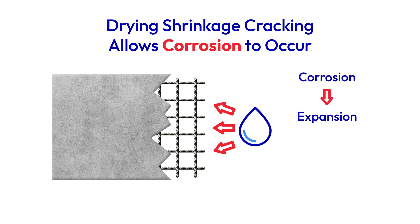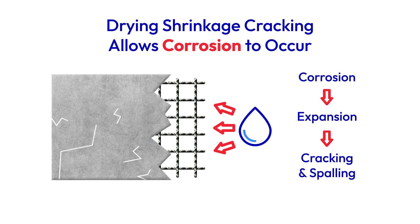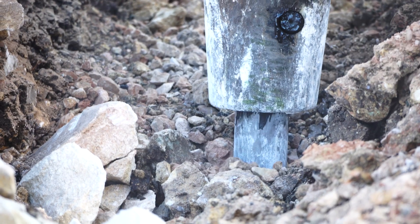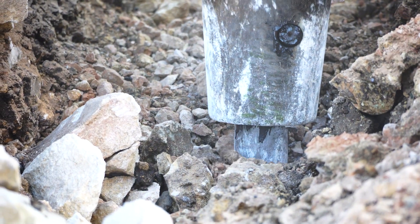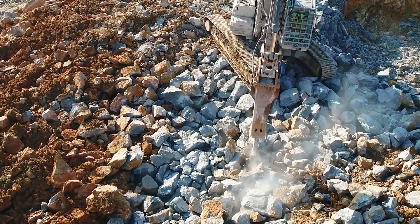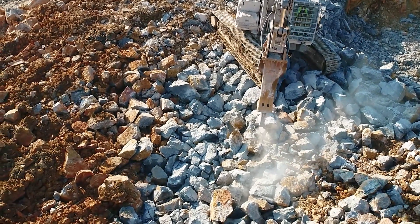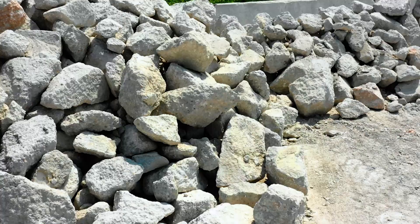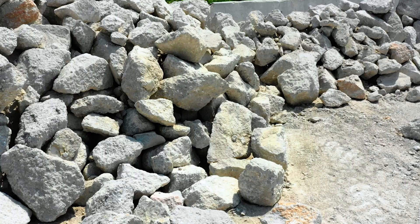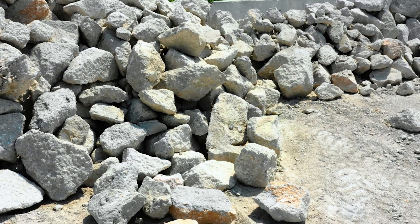Corrosion causes expansion, and expansion causes cracking and spalling, and then it just gets worse and worse over time. A lot of times the solution to fixing drying shrinkage is to remove the concrete, but removal and replacement of concrete is the opposite of what we want to achieve with better sustainability.